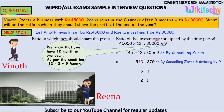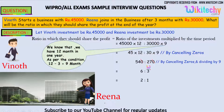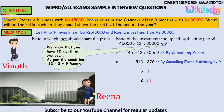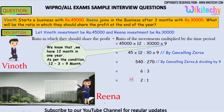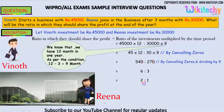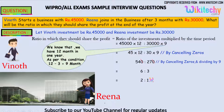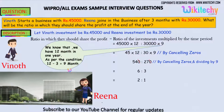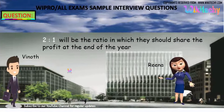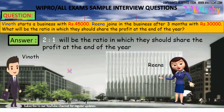Cancelling the zeros, you get 540 is to 270, which simplifies to 6 is to 3, so it's 2 is to 1. The ratio of profit between Vino and Rena should be 2 is to 1. If the total profit is 100 rupees, Vino gets two-thirds and Rena gets one-third. That's the answer: 2 is to 1.